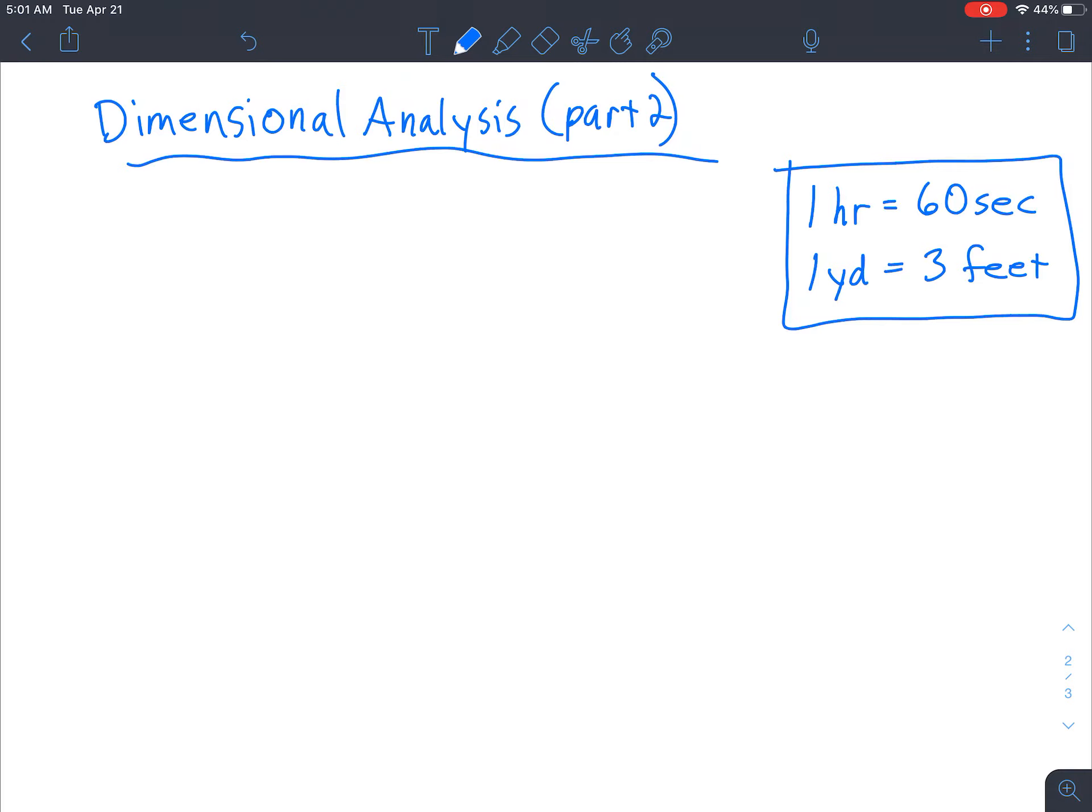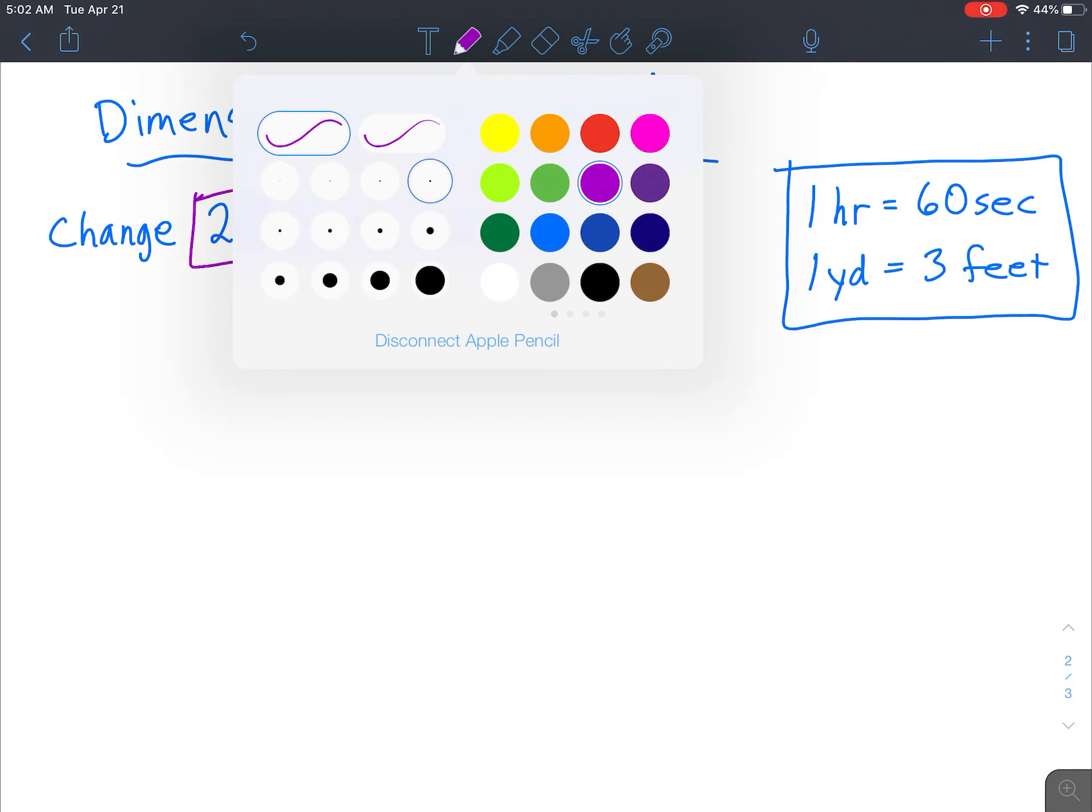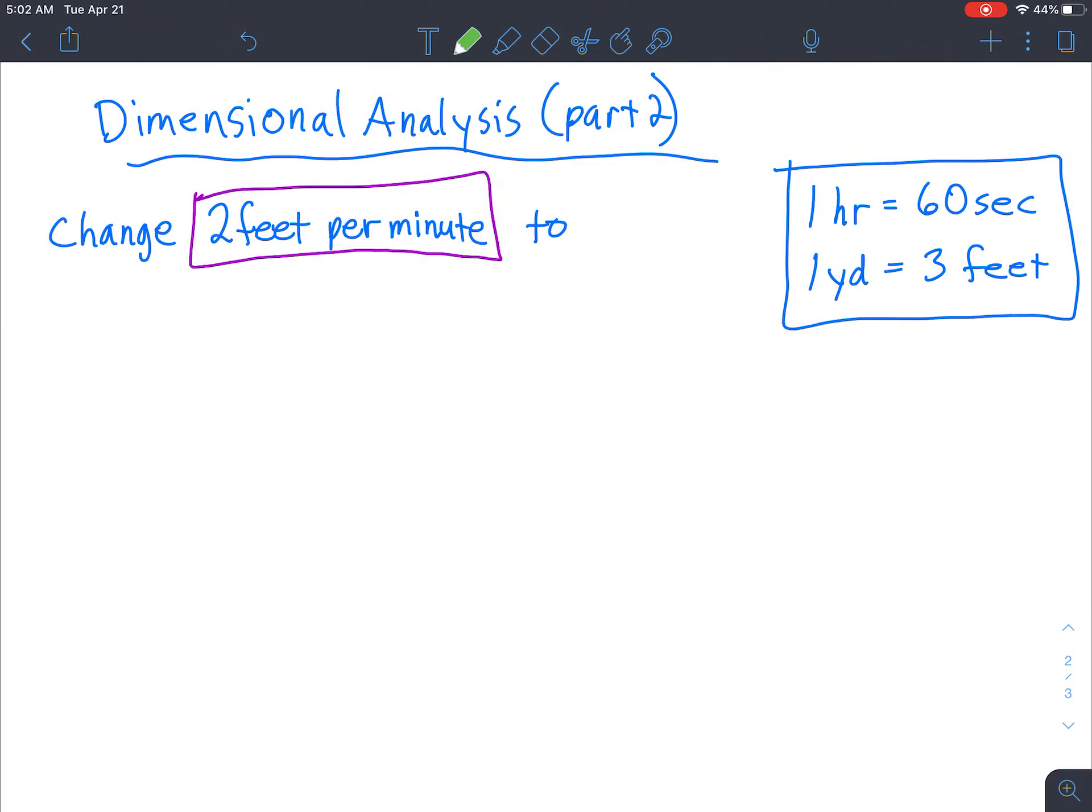Okay, so for the first problem, we're going to end up changing, so go ahead and write down change. Two feet per minute. And I'll change the color maybe for this, or I'll highlight that one in purple. And let's find green. So we're changing two feet per minute to yards per hour.